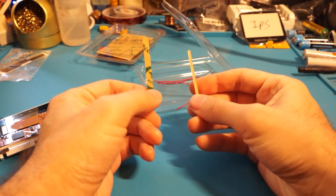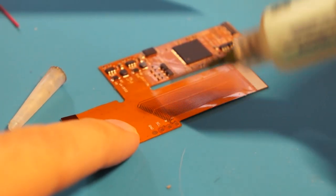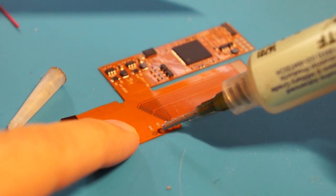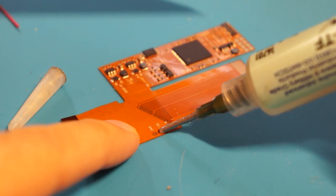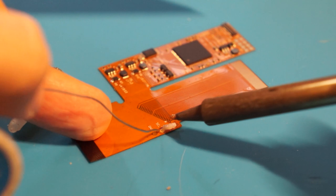Now let's get started with the install. If you want brightness controls, go ahead and tin the connection points on the flex ribbon cable. The ground pad is not required. Go ahead and solder the included wires to the pads as shown.